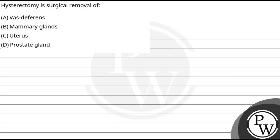Hello, let's read the question. In this question, we have said that Hysterectomy is the surgical removal of what? We have options: A - vas deferens, B - mammary gland, C - uterus, D - prostate gland.